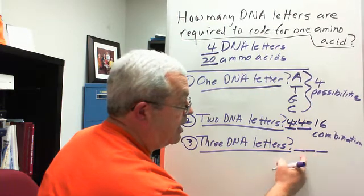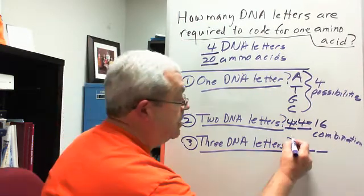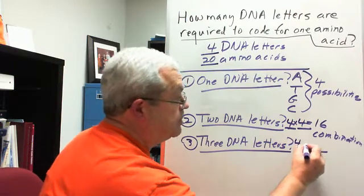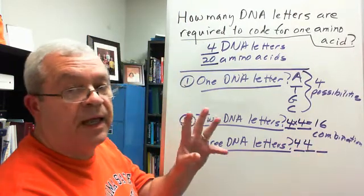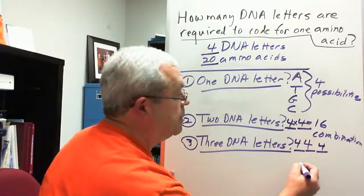So we have A, A, A, A, A, T. A whole bunch of different combinations, right? And so there's four possibilities in this position. Four possibilities. Each one of them could be an A, T, G, or C. That's four. And so what's the total number of combinations now?